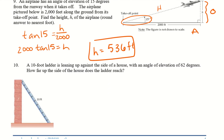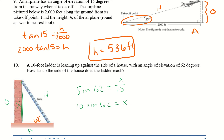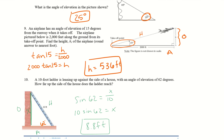Number 10: a 10-foot ladder is leaning against the side of a house with an angle of elevation of 62 degrees. How far up the side of the house does the ladder reach? We have hypotenuse, opposite, and adjacent, so we're using sine: sine of 62 equals X over 10. Multiply by 10 on both sides — 10 times sine of 62 equals X. Rounding to one decimal place, the ladder reaches about 8.8 feet up the wall. That is the end of 7.4, part 1 of right triangle trigonometry. Be sure to ask questions if you have any, and have a wonderful rest of your day.